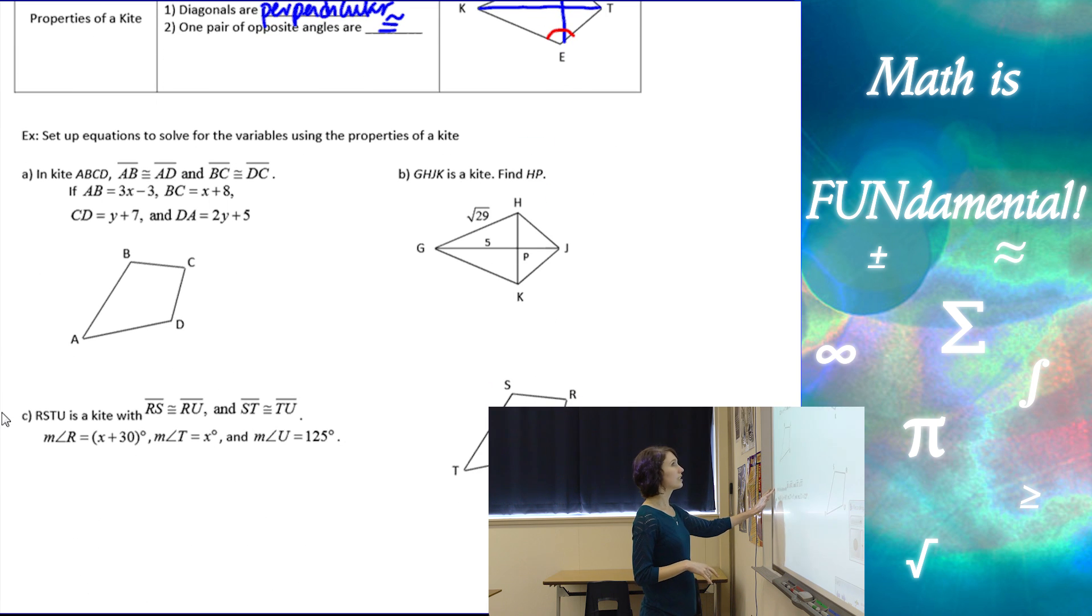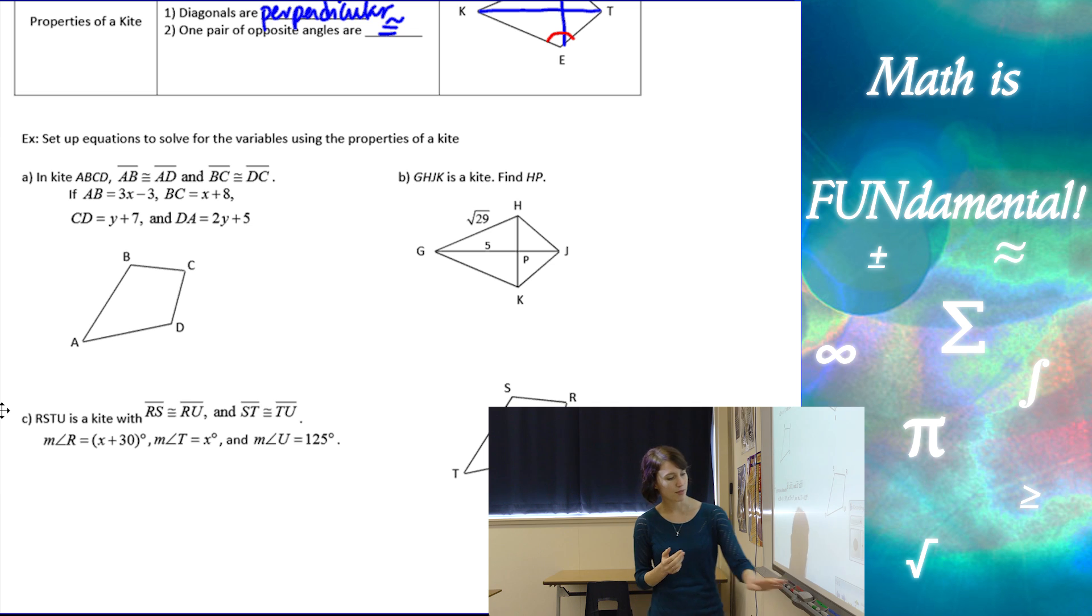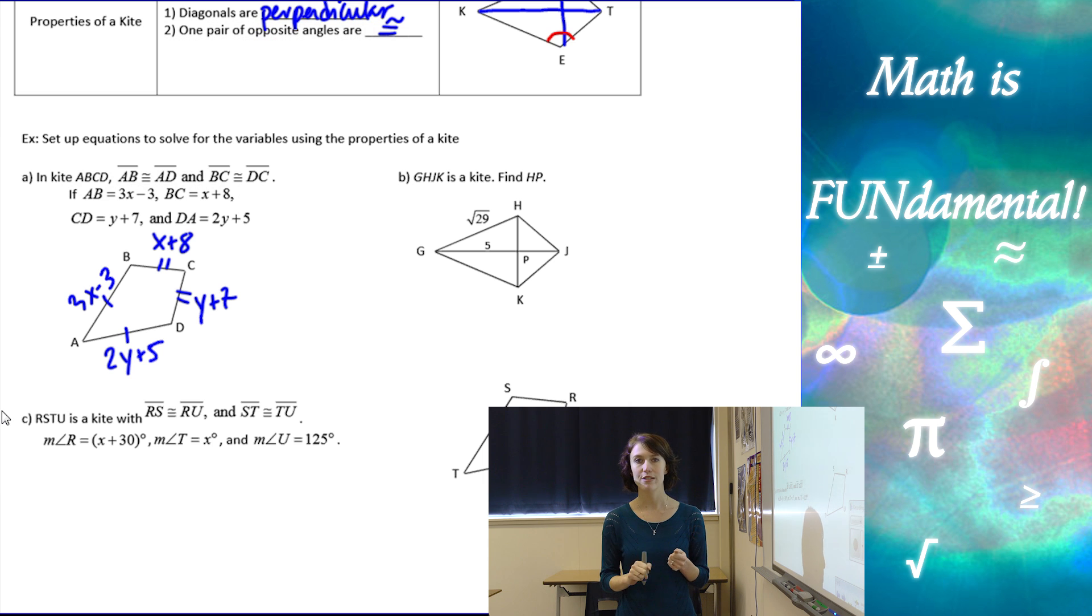So let's look at these ones. We're going to set up some equations, solve for some variables. Alright, so a, b, c, d, ab is congruent to ad, bc is congruent to cd, ab is 3x minus 3, bc is x plus 8, cd is y plus 7, and da is 2y plus 5. Always use your diagram and write your information on your diagram so you can figure out what you have.